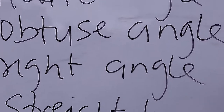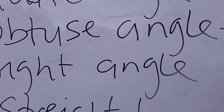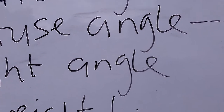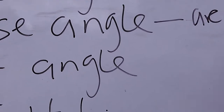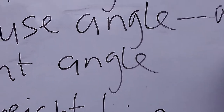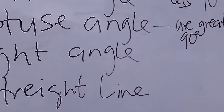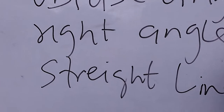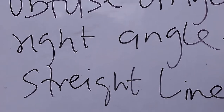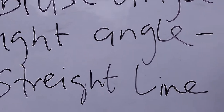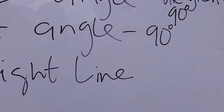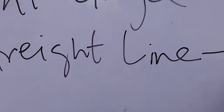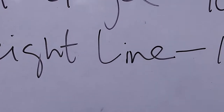The Obtuse angles are greater than 90 degrees. Then the Right angles are angles that are equal to 90 degrees. The Straight Line angles are angles that are equal to 180 degrees.